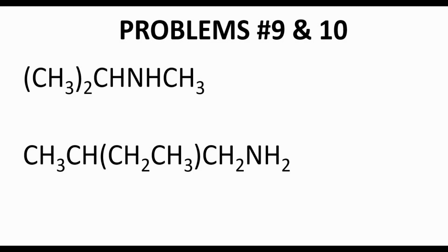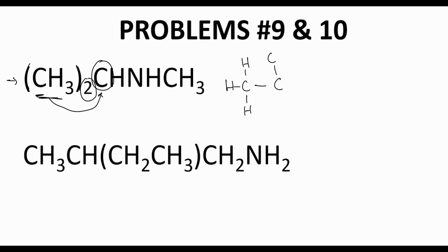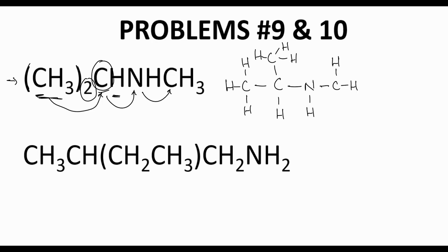For problem 9, we notice the carbon is inside parentheses, meaning there are two CH3 groups connected to the next carbon. We start with that central carbon and draw the two CH3 groups off of it, then add a hydrogen to the central carbon. This carbon is also attached to a nitrogen, which has a hydrogen, and that nitrogen is in turn attached to a final CH3 group. All carbons have four bonds and full octets. The nitrogen has only three bonds, so it needs one lone pair to satisfy its octet.